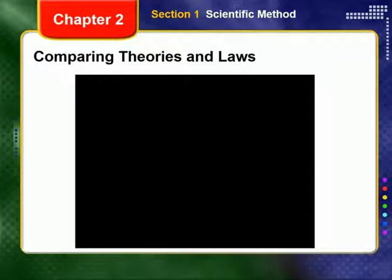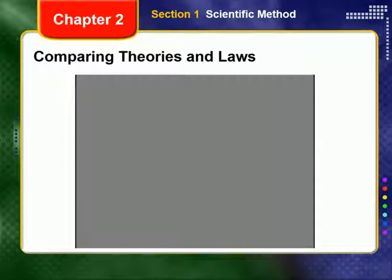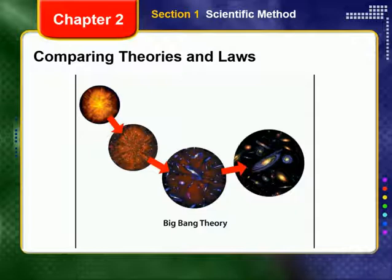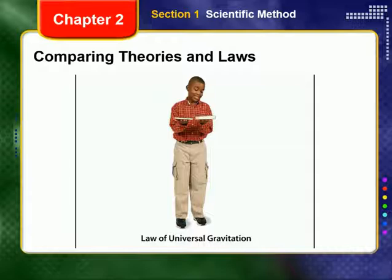A scientific theory is an explanation that has been tested by repeated observations. Theories can be changed or replaced as new observations are made or as new hypotheses are tested. For example, the Big Bang Theory is an explanation for the origin of the universe. The Big Bang Theory states that the universe was once compressed into a small, hot, and dense volume that exploded and expanded in all directions. A theory tells you why something happens. The law of universal gravitation says that if you drop a book, it will fall and hit the ground. Laws only tell you what happens, not why it happens.